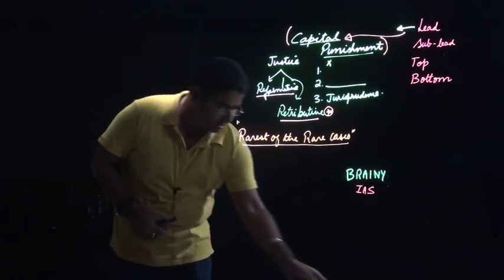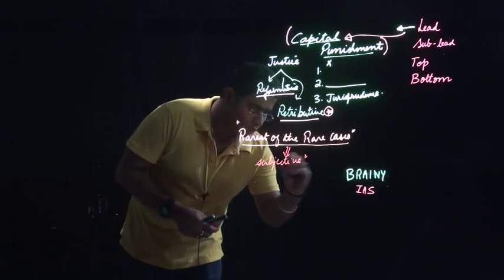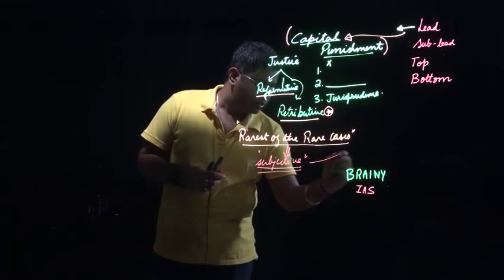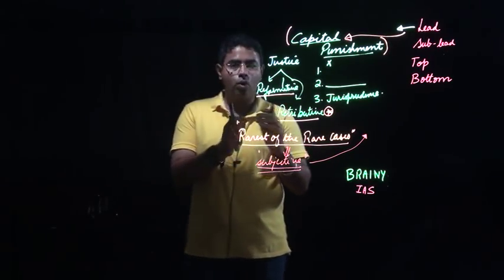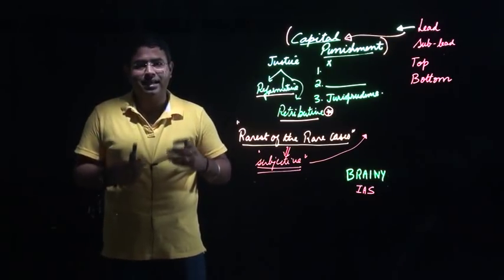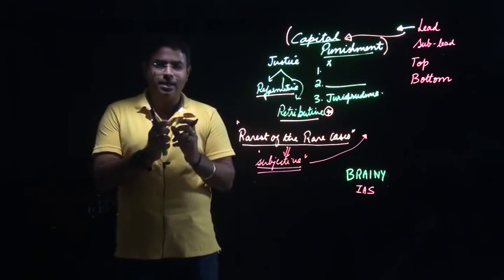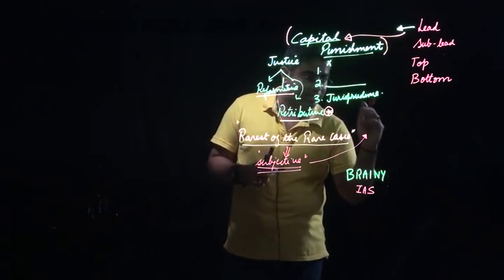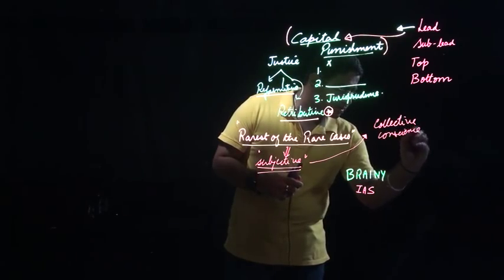As far as rarest of the rarest cases is concerned, this is something that is very subjective in nature. This issue is problematic for the judiciary also. Rarest of rarest cases are defined as cases that shake the collective conscience of the entire community. When the whole society feels that the crime that has occurred is extremely condemnable, that hurts the collective conscience of the society.